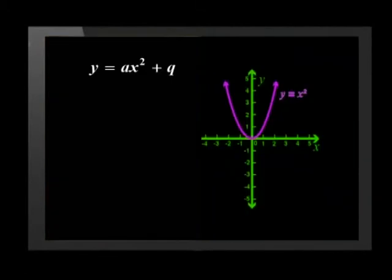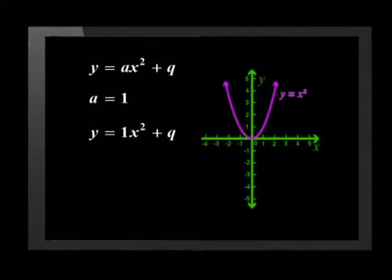Let's check. We'll start with a formula for the family of quadratic functions y equals A x squared plus Q. We will keep A to 1 so that we can focus on the changes made by adding an amount of Q to x squared. Let's first look at what happens if Q is equal to 1.